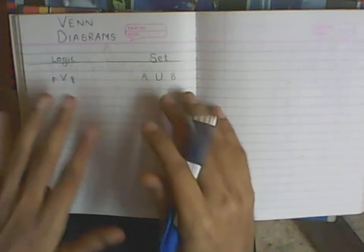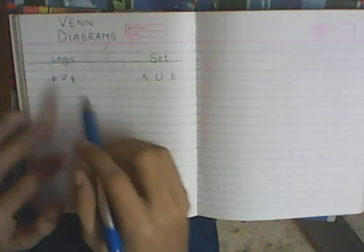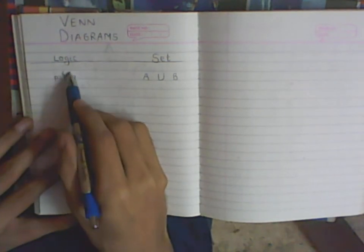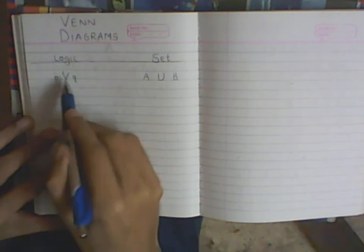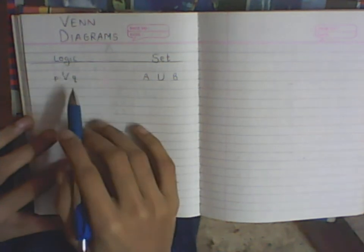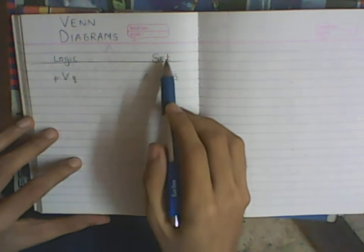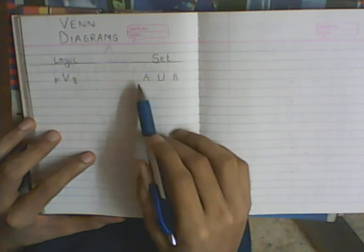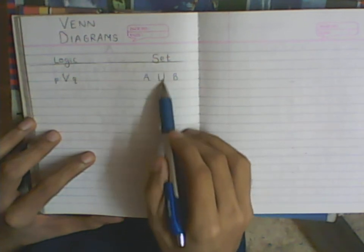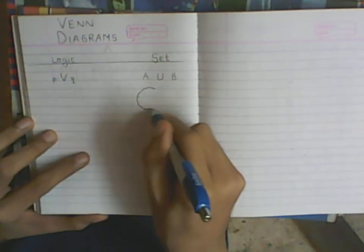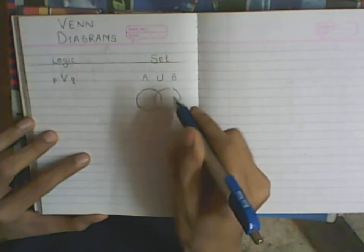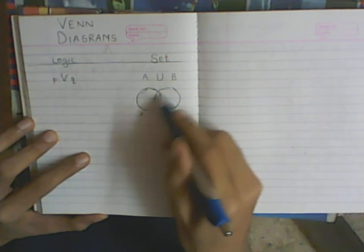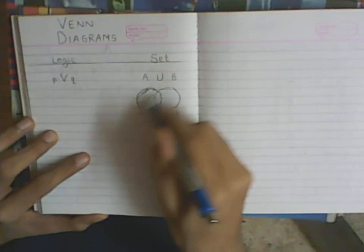We will see how these two connect with each other. The very first logical connective we studied was OR, where we had two statements P and Q with an OR between them. This is very much similar to the set concept of the union of two sets. So you have two sets A and B, and you take the union — in set theory, this represents all of the region A or B.